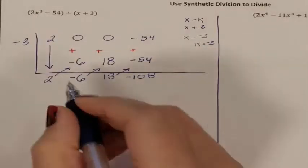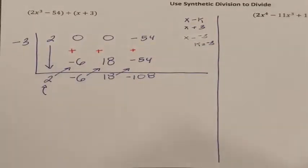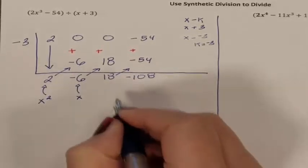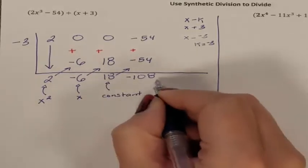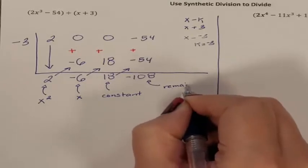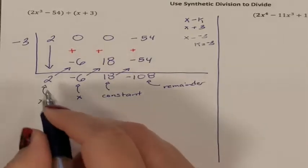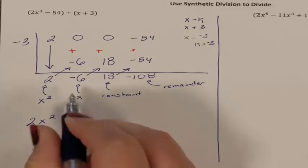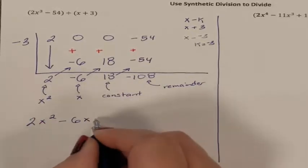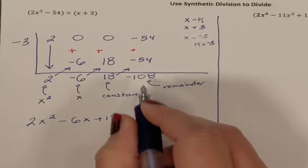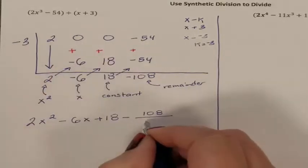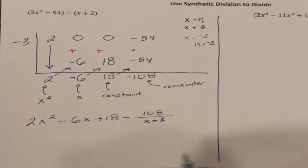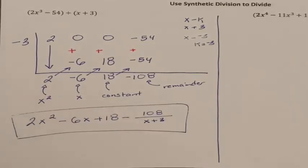If the highest exponent you started with was a 3, that meant your highest exponent in your answer is going to be a 2. So exponent 2, exponent 1, doesn't have an exponent, which meant this is my constant, which meant your final answer is going to actually be your remainder. So I have 2x squared minus 6x plus 18, and I'm going to subtract the 108 all over divided by x plus 3. So this is my final answer, and I am done.